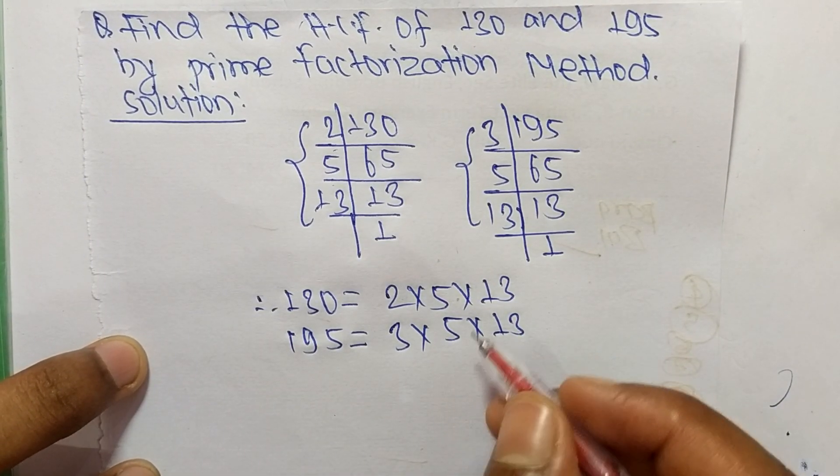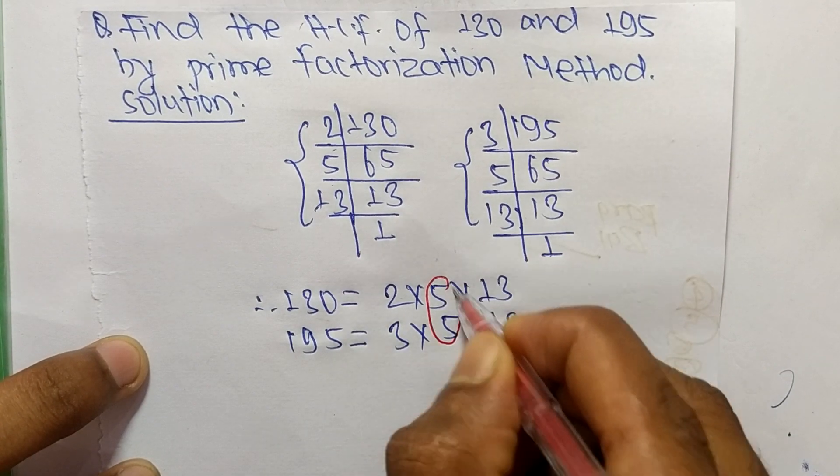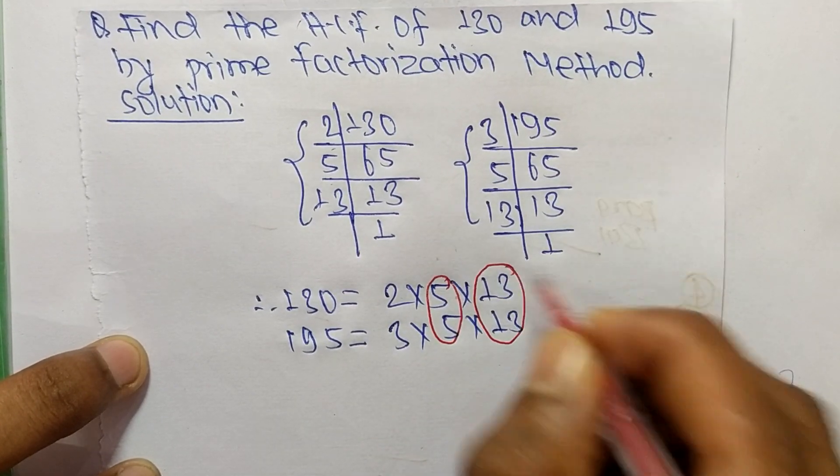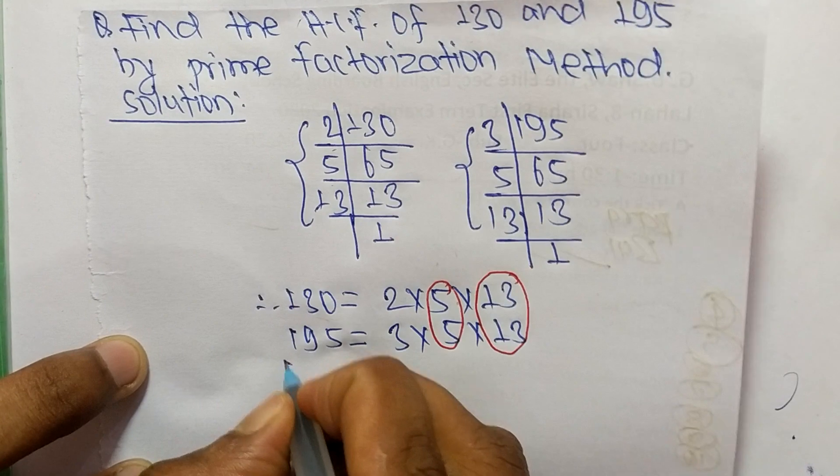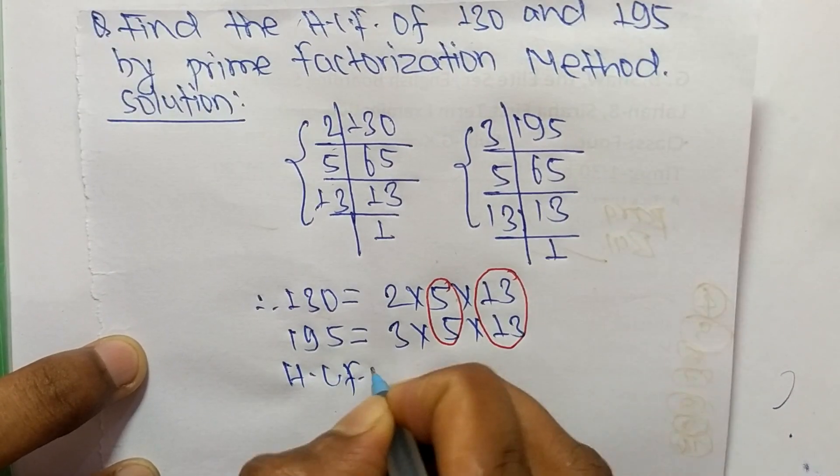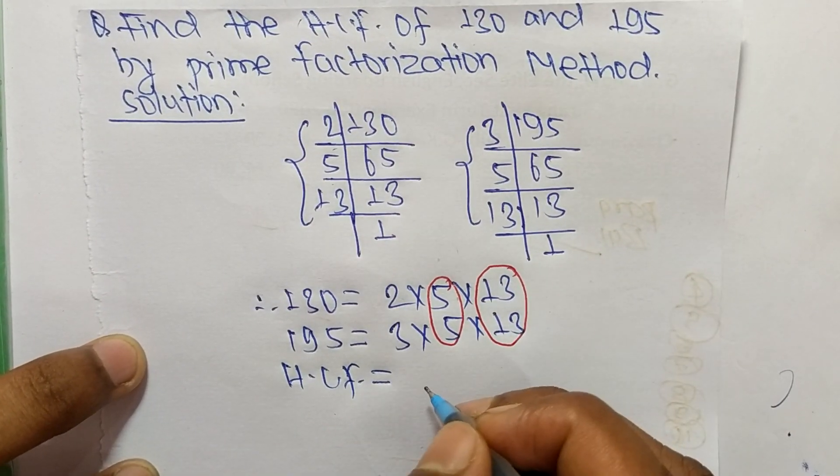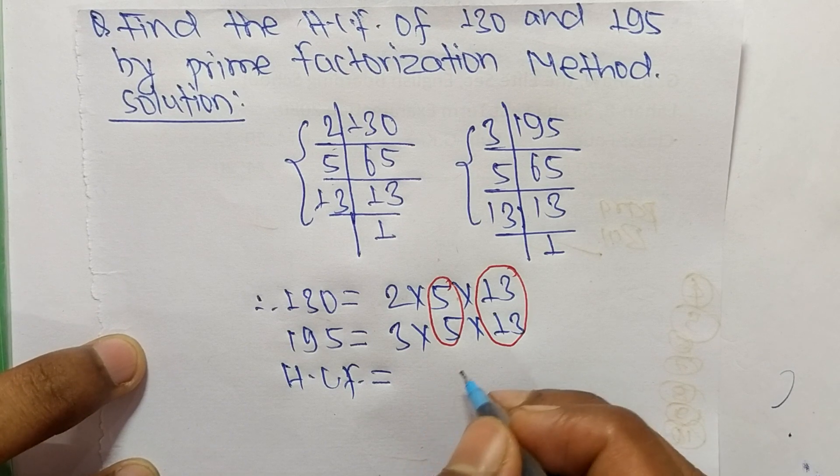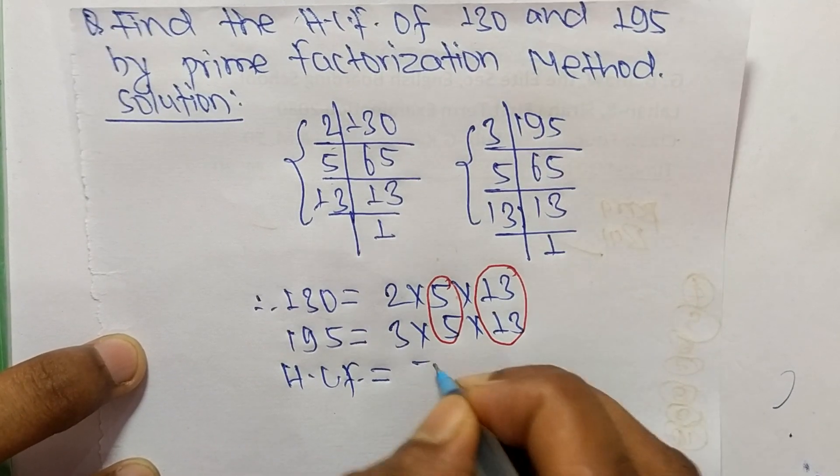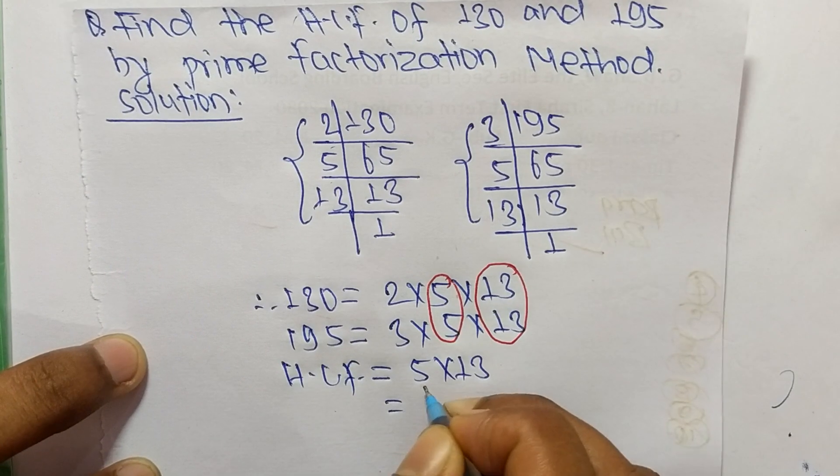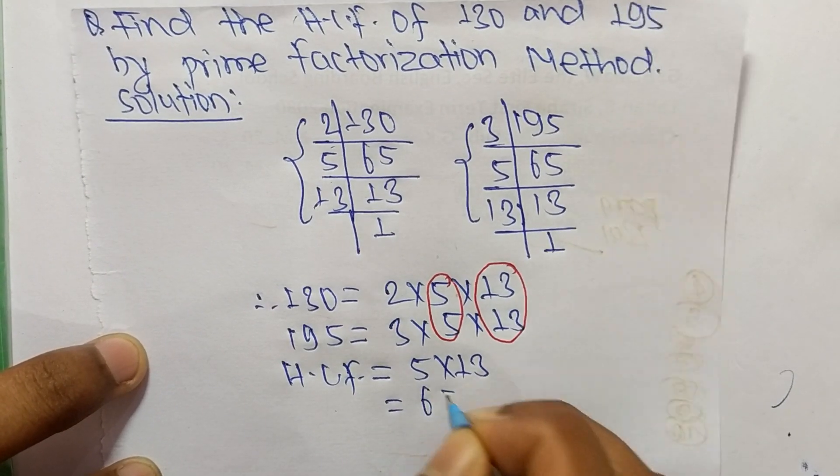Now we select the common factors in these prime factorizations. The common factors we have are 5 and 13. So the HCF is equal to the product of common factors: 5 times 13, which equals 65.